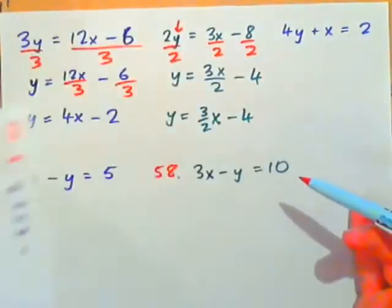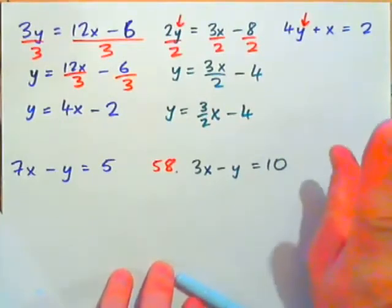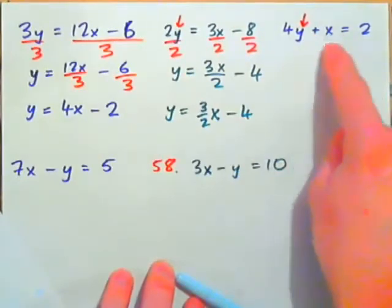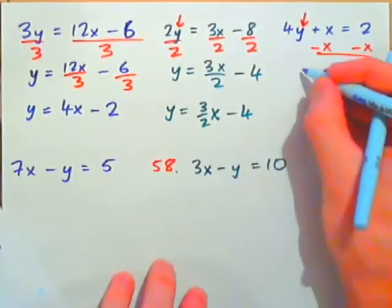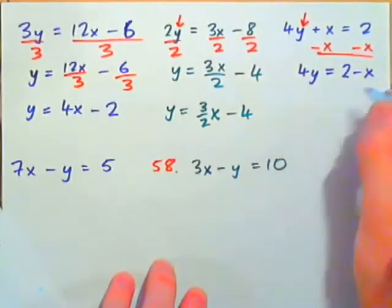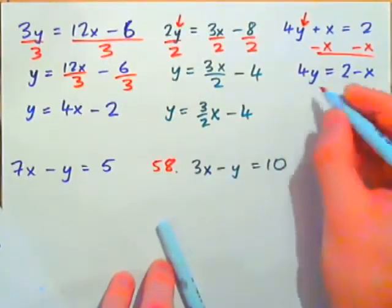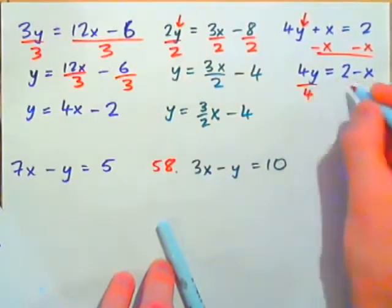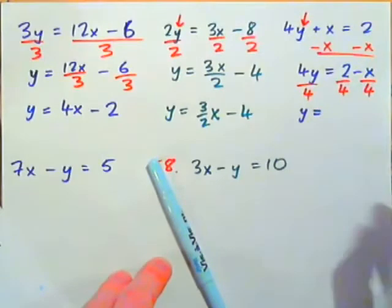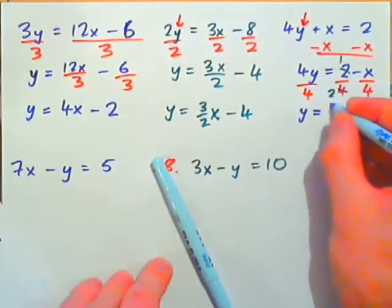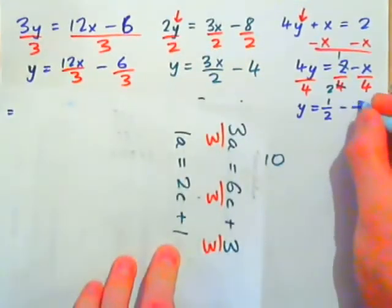Now let's look at 4Y plus X equals 2. Y has been multiplied by 4, then X was added. Undo the last operation first — subtract X from both sides to get 4Y equals 2 minus X. Then divide everything by 4: 2 over 4 reduces to 1 half, and X over 4 stays as X over 4. So Y equals 1 half minus X over 4.